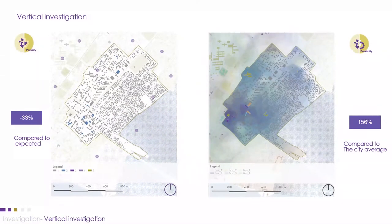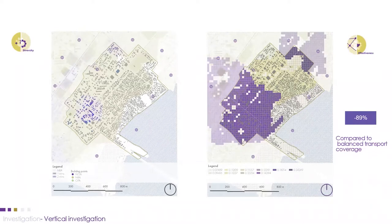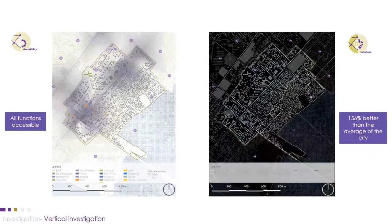The void map shows 26% less void compared to the city's average void value. Moving to vertical investigation, the policy map is 33% less than the expected value. However, the proximity map shows 156% better than the city average. The diversity map indicates necessary-occupational activities concentrated in the lower part of barrio 11. The effectiveness map is 89% less than the balanced transport coverage in the city. The accessibility map shows all functions are accessible, and the interface map is 156% better than the city average.